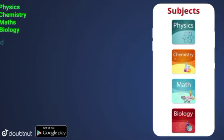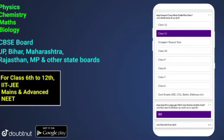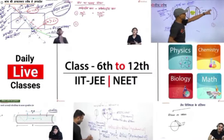The subjects of Physics, Chemistry, Mathematics and Biology. CBSE board, UP, Bihar, Maharashtra, Rajasthan, MP and other states boards. It's for class 6-12, IIT JEE Mains and Advanced, NEET. Get the video solution in 5 seconds.